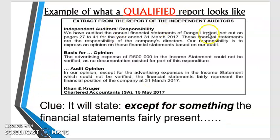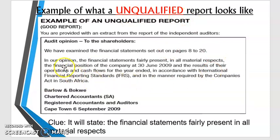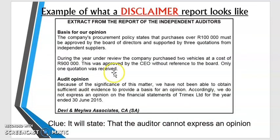Here are examples of each report type. For a qualified report, the clue is 'except for' — for example: 'In our opinion, except for the advertising expense in the income statement which could not be verified, the financial statements fairly present.' For an unqualified report: 'In our opinion, the financial statements fairly present in all material respects.' For a disclaimer: 'Because of the significance of this matter, we have not been able to obtain sufficient audit evidence to provide a basis for an opinion.'